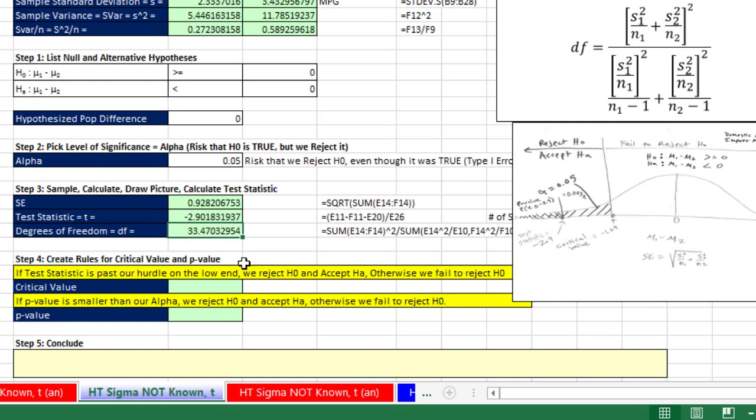And lucky for us, we don't have to do it in the cell itself with the round function, because the t functions will do it automatically. Now let's look at this picture. Here's 0. We already calculate 2.9. We actually have to calculate this. Now this is the hurdle.